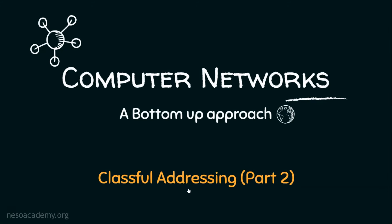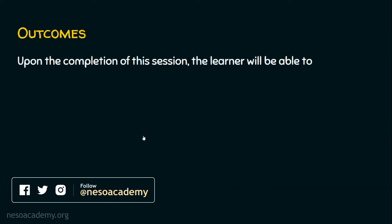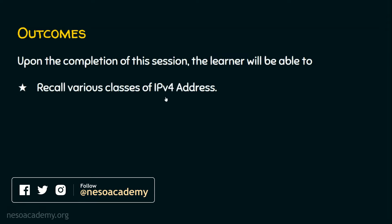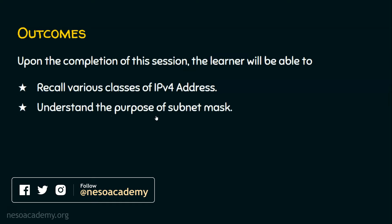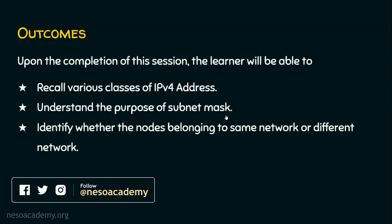Welcome to part two of classful addressing. In today's session, we have three outcomes. Upon the completion of this session, the learner will be able to: Outcome one, recall the various classes of IPv4 address. Outcome two, understand the purpose of subnet mask. And outcome three, identify whether nodes belong to the same network or a different network.